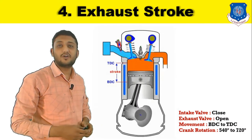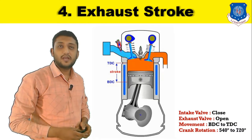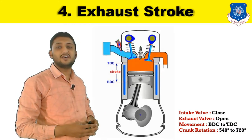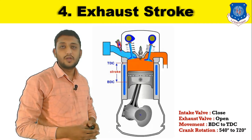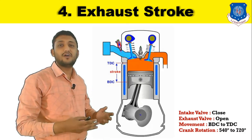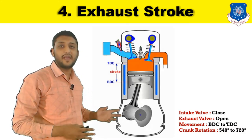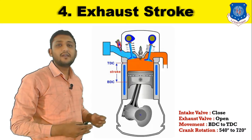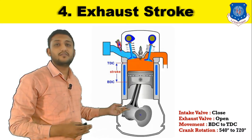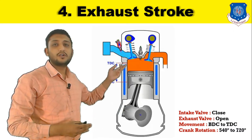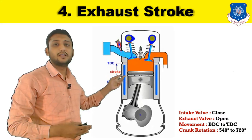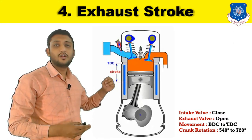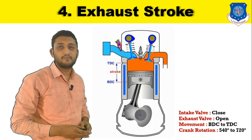Moving on to the exhaust stroke. In the exhaust stroke, the fuel which was ignited during the power stroke produces exhaust gases that should be expelled out from the cylinder. The piston moves from bottom dead center to the top dead center, forcing the exhaust gases out through the exhaust manifold.